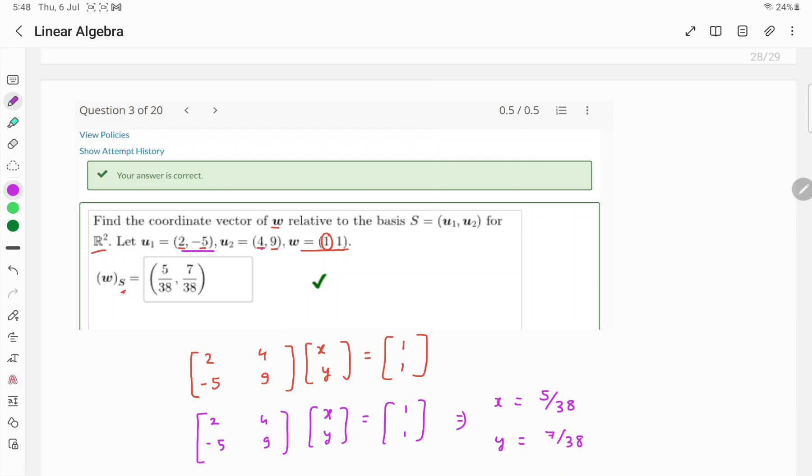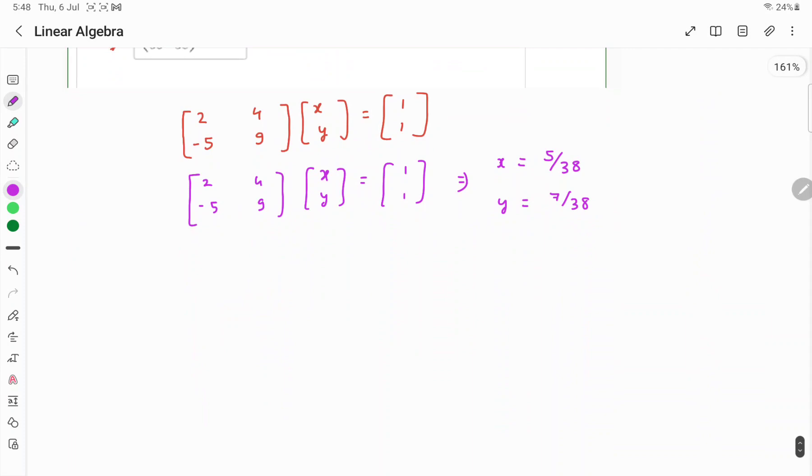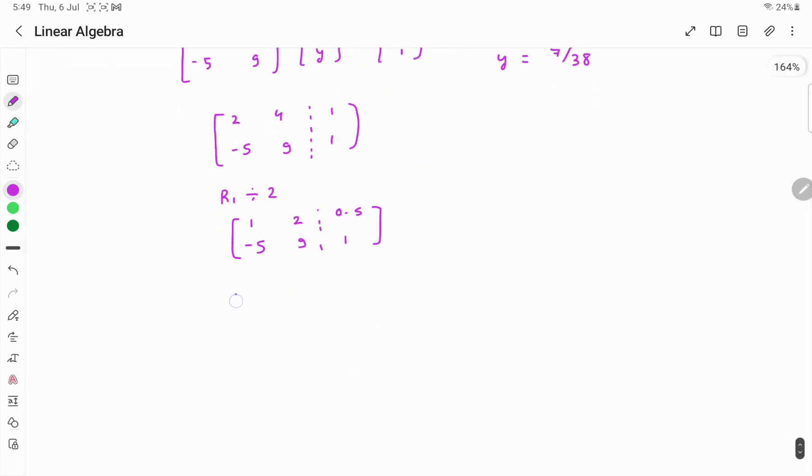You can also solve this by row reducing to get 1, 0. For example, take the matrix [2, -5; 4, 9] augmented with [1; 1]. If you divide R1 by 2, you will get 1, -2.5, 0.5. Let us copy this.